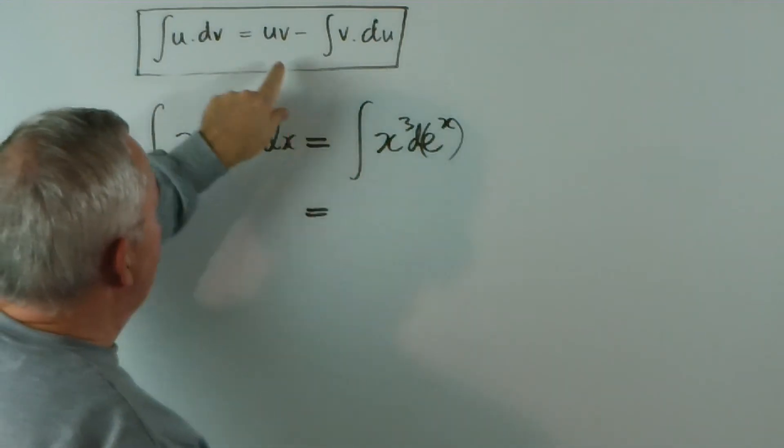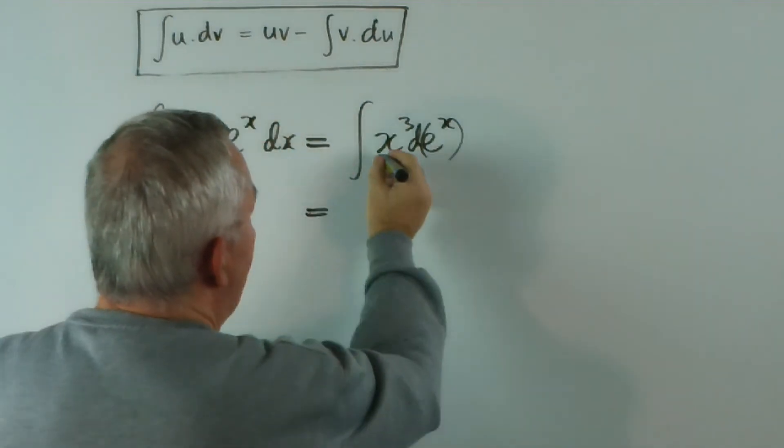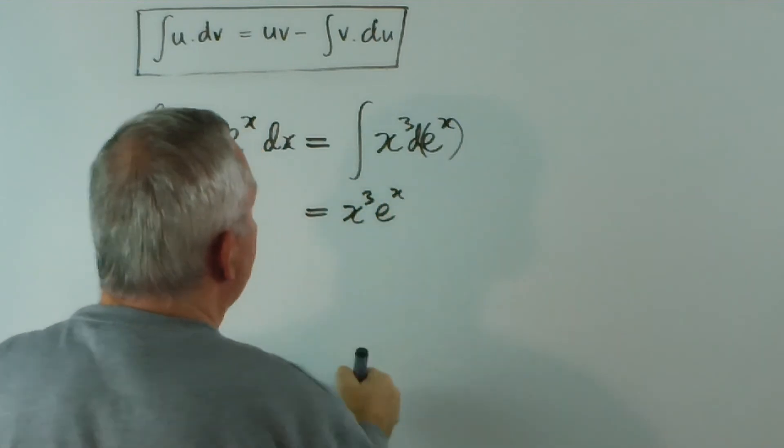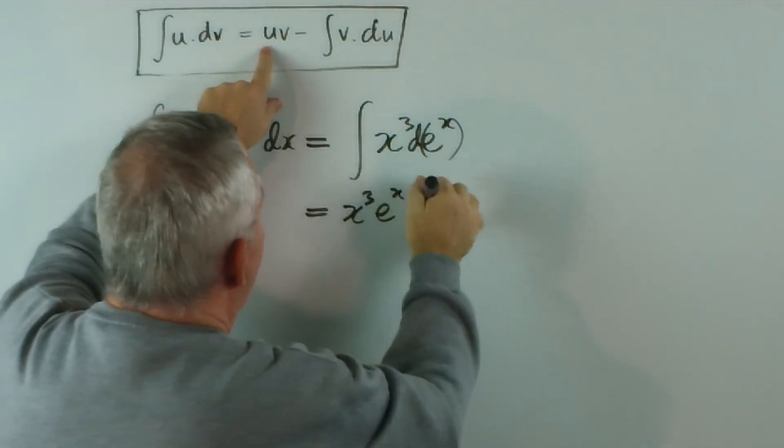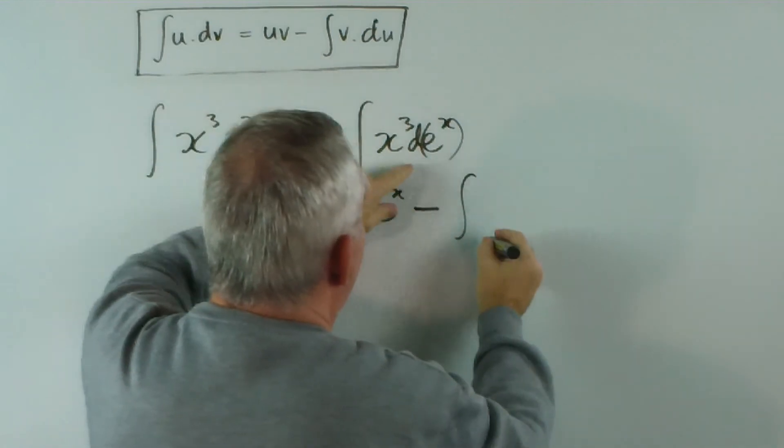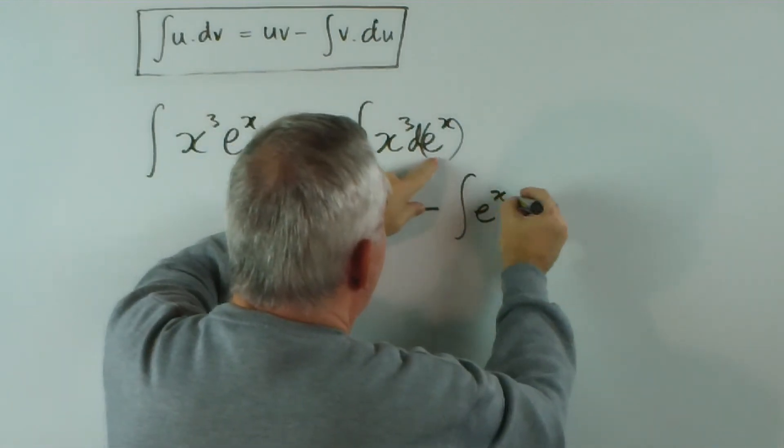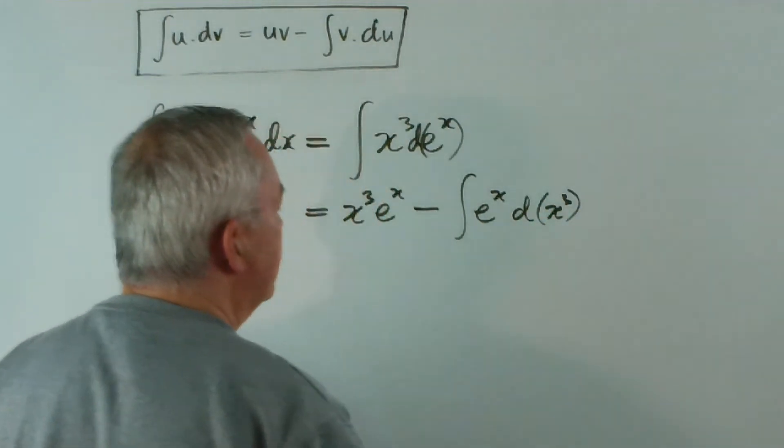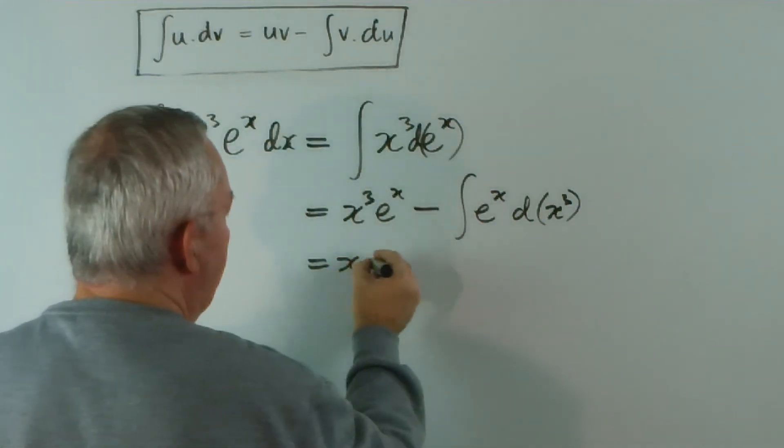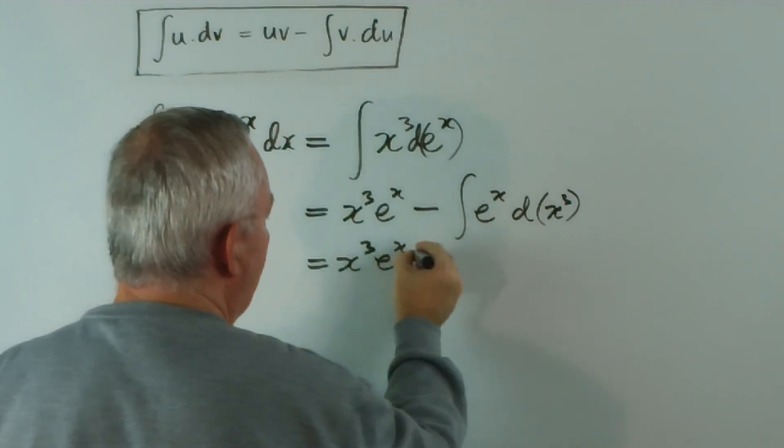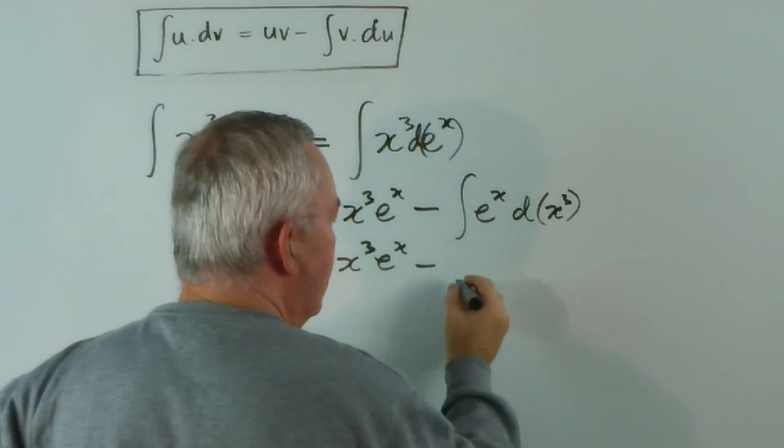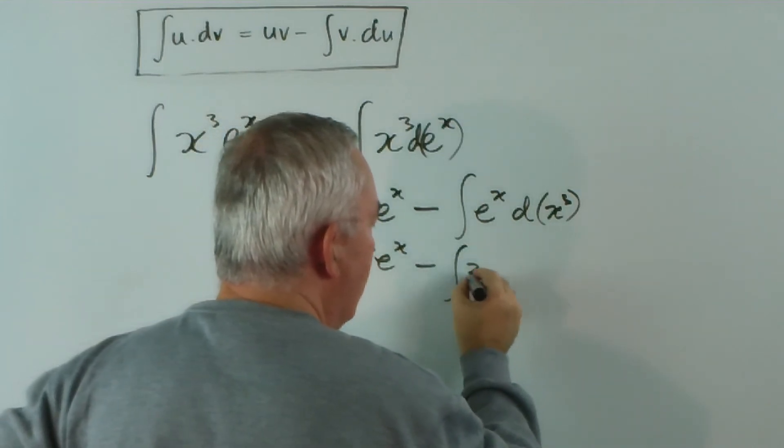Once it's inside, this is going to give me x^3 e^x - u times v - minus the integral of e^x d, or the derivative, x^3. Now, if we work this out, the derivative of x^3 is going to be 3x^2.